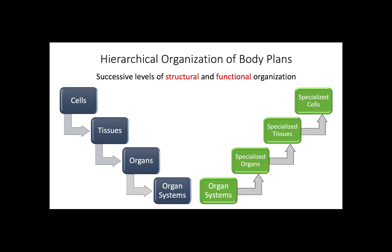For example, think about the digestive system and how each organ has a specific role. The stomach's main function, for example, is to break down proteins, which is accomplished by digestive fluids secreted by tissues making up the stomach's walls, and these fluids are produced by specialized cell types responsible for secreting digestive enzymes, generating hydrochloric acid, and producing mucus to protect the stomach lining.